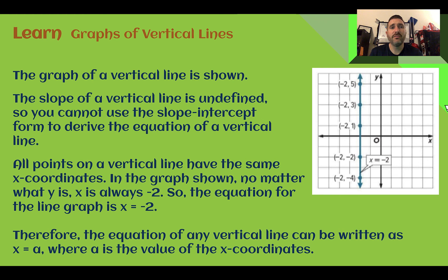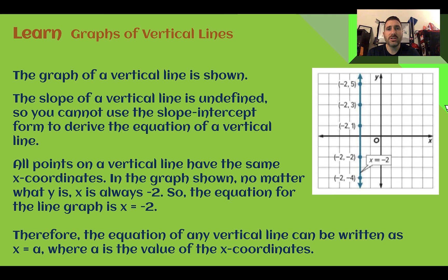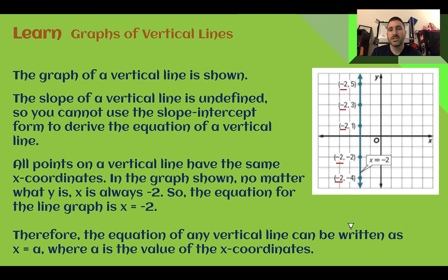Let's learn: Graphs of vertical lines. The graph of a vertical line is shown. The slope of a vertical line is undefined, so we can't really use slope-intercept form for a vertical line. But similar to horizontal lines where all points had the same y-coordinate, a vertical line has all points with the same x-coordinate. So if we look at this line, no matter what, they all have an x-coordinate of negative two. The equation for a vertical line is x equals a number, and whatever that number is, it's the x-coordinate of all the values.